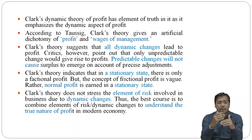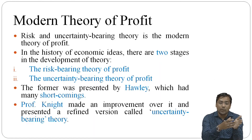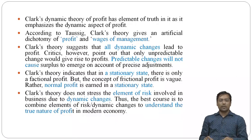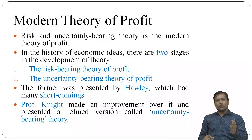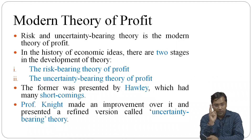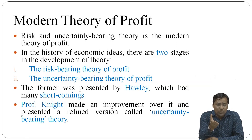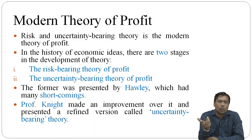To understand the risk and dynamic changes and the true nature of profit in the modern economy, let us see the modern theory. The classical and traditional economists had their views; now what does the modern theory of profit say? The previous theories ignored risk and dynamic changes. Modern theory of profit takes into consideration risk and uncertainty. In the history of economic ideas, two stages of theories were developed: one is risk-bearing theory and the second is uncertainty-bearing theory.